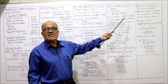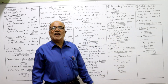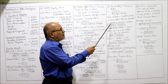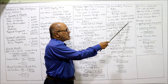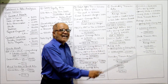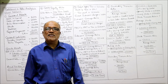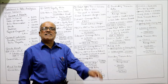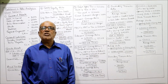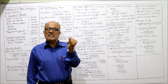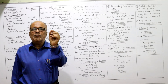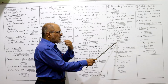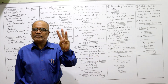Net sales equals credit sales plus cash sales minus return inward: 1,50,000 plus 2,50,000 minus 25,000 equals 3,75,000. Gross profit is 20% of net sales: 20% of 3,75,000 equals 75,000. COGS equals net sales minus gross profit: 3,75,000 minus 75,000 equals 3,00,000.